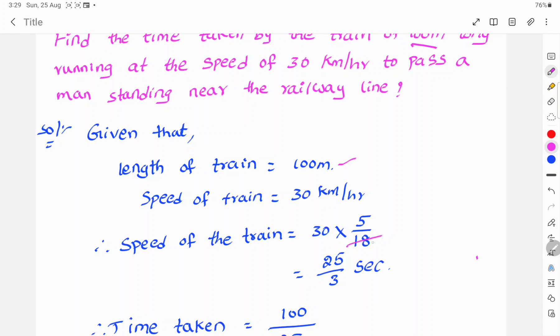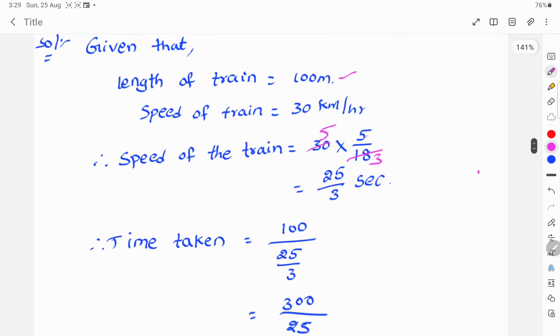5 by 18, 6, 3 is 18, 6, 5 is 30. So 4, 5 is 25 by 3 seconds. And therefore,